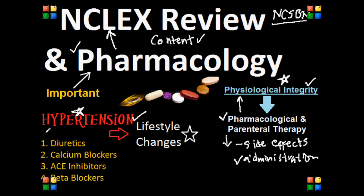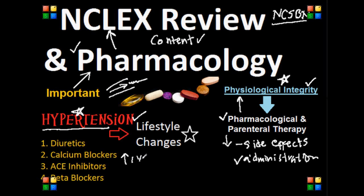What is hypertension? Hypertension, as we all know, is a term used to describe high blood pressure. Blood pressure is the measurement of the force against the walls of the arteries in our body as the heart pumps blood throughout the body. In nursing school, hypertension can be described as a systolic pressure above 140 millimeters of mercury, while the diastolic pressure is above 90 millimeters of mercury.